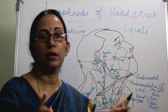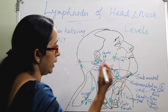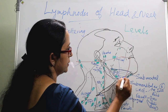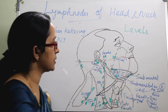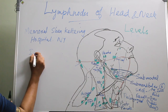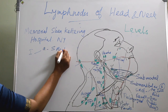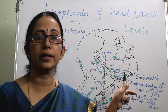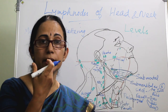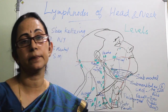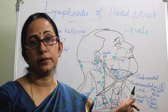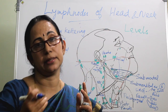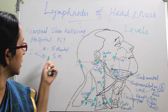Level 1 includes two structures: level 1A is submental and level 1B is submandibular. The drainage areas include the anterior floor of mouth, lower lip, lower gums and teeth, and part of the ventral tongue and floor of the oral cavity. So the oral cavity, tongue, gums, teeth, and floor of mouth are drained by level 1.